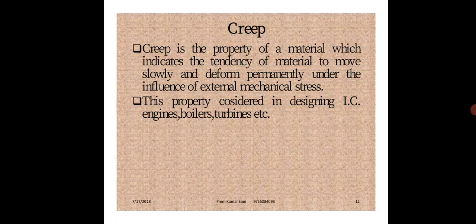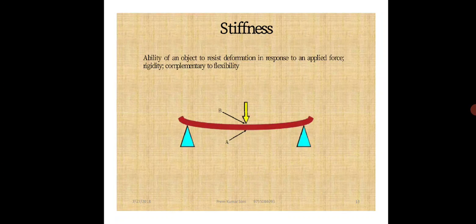The creep property is considered in designing IC engines, boilers, and turbines — it is an important property in the engineering field. Next is Stiffness. Stiffness is the property of a material by virtue of which it resists deformation. When you apply a load, how much it resists the deformation — that is the measurement of stiffness. Stiffness is the resistance to deformation.